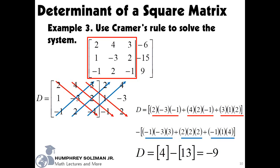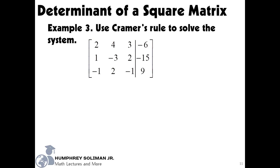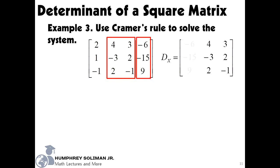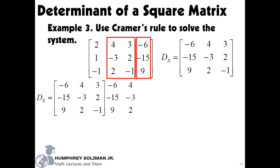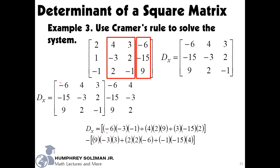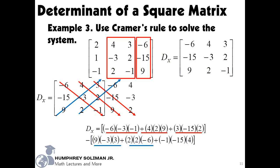Next, we need the determinant of the system's coefficients for the variables, but we have to replace the column for the coefficients of x by the column of the constants of the equations. This will be our value of dx. We already copied the first two columns and placed these beside it. Then we will get the sum of the quantity: negative 6 times negative 3 times negative 1, plus 4 times 2 times 9, plus 3 times negative 15 times 2. Minus the sum of the quantity: 9 times negative 3 times 3, plus 2 times 2 times negative 6, plus negative 1 times negative 15 times 4. Finally, dx equals 9.